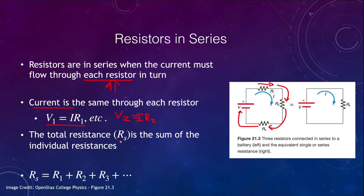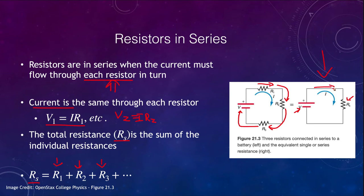The total resistance, R_S, is the sum of the individual resistances. So the total resistance for three resistors is R1 plus R2 plus R3. That gives us a net circuit with a voltage source and a single net resistor with total resistance equivalent to the sum of those three resistors. We can then simplify and calculate the current, voltage, and everything across the circuit.